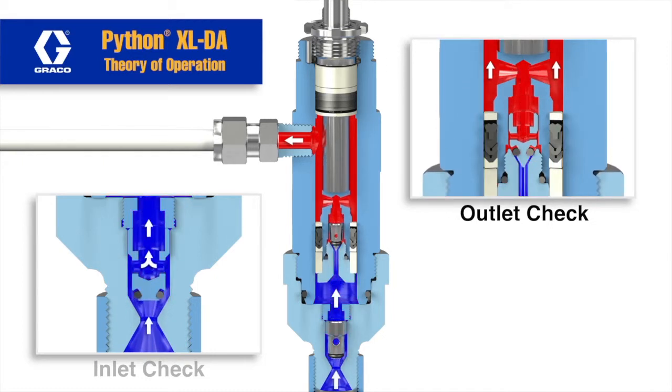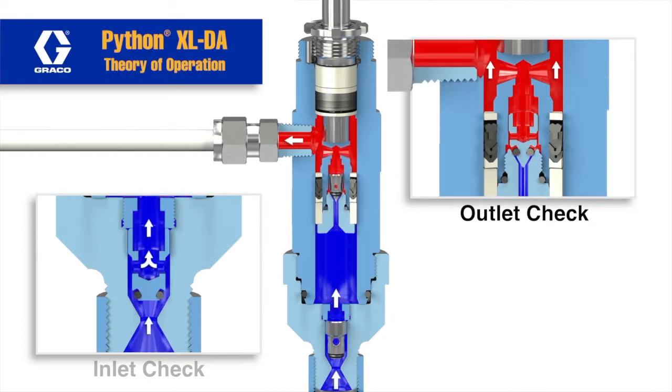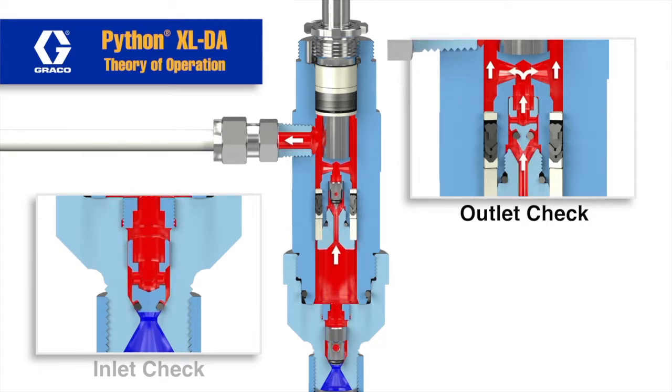Let's first take a look at what happens in the downstroke. Let's stop the animation here. Due to the fluid pressure in the downstroke, you'll notice that the bottom check valve closes while the fluid passes through the center of the inlet check housing and opens the top check valve.